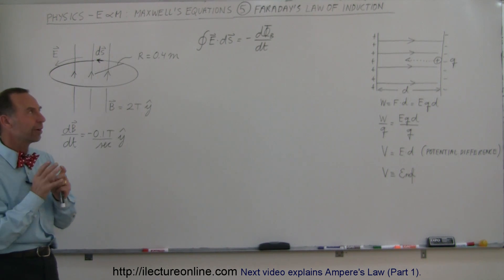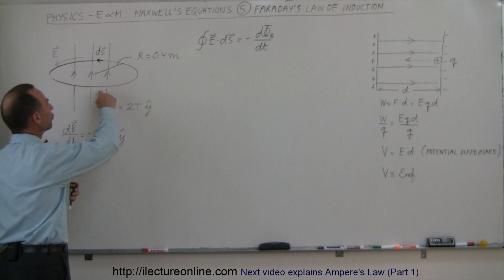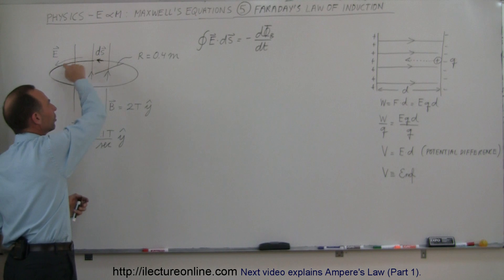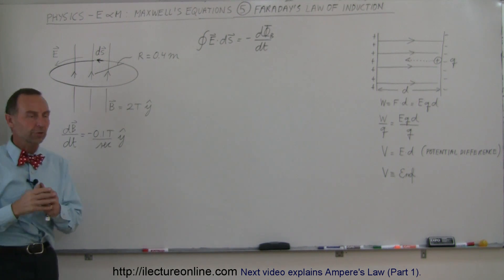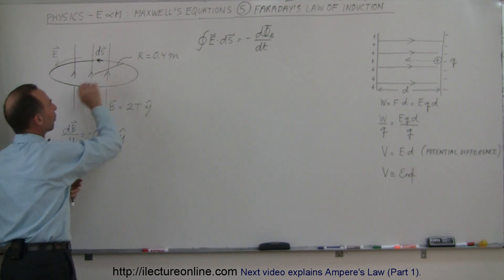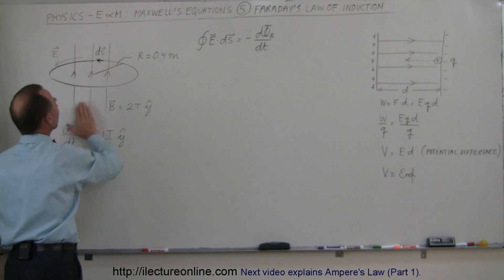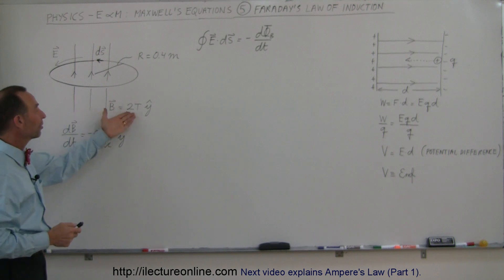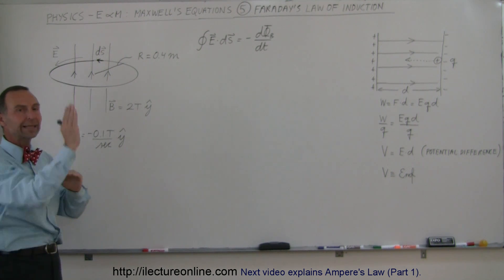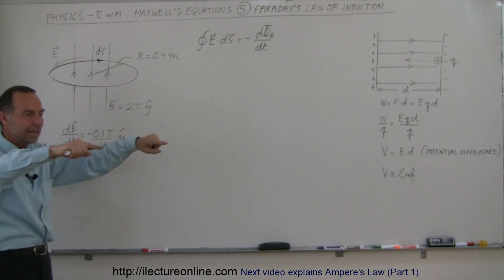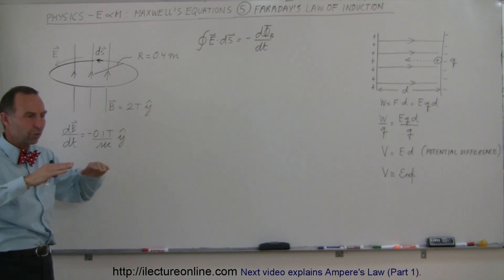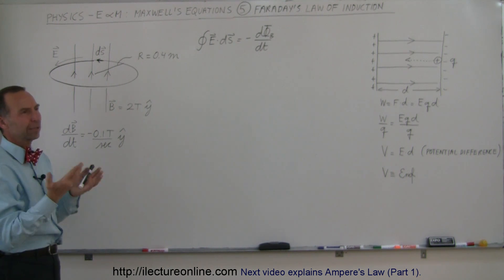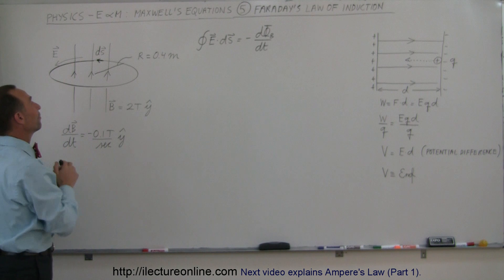We can understand Faraday's Law of Induction by taking a conductor and making it into the shape of a circle. Here we have a circular or loop conductor with a radius of 0.4 meters. Let's put a magnetic field through the conductor — say the magnetic field strength is two Teslas, directed in a positive y direction, where the perpendicular to the plane of the loop is parallel to the B field.